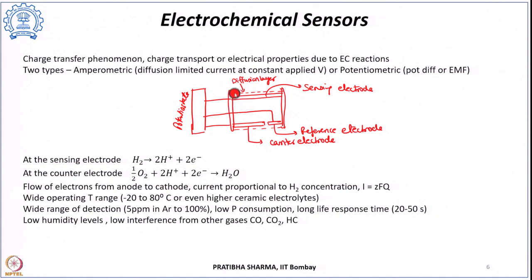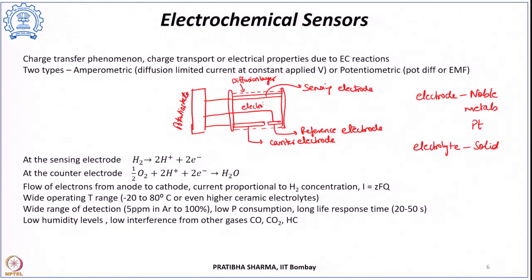The electrodes are typically made of noble metals like platinum, and the electrolyte between them can be liquid or solid — commonly Nafion as a solid electrolyte. The diffusion layer also prevents the electrolyte from drying, prevents leakage from the cell, and prevents diffusion of unnecessary gases into the electrolyte.